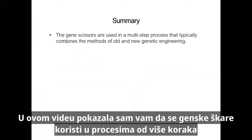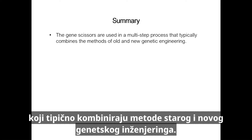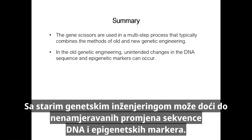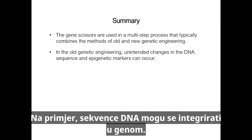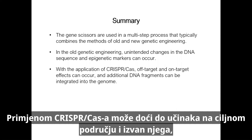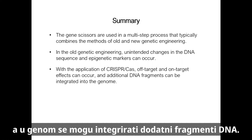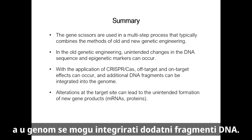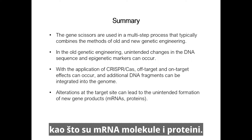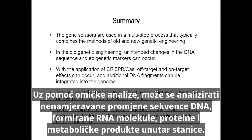In this video, I showed you that the gene scissors are used in a multi-step process that typically combines the methods of old and new genetic engineering. Unintended changes can occur during these processes. With old genetic engineering, unintended changes in the DNA sequence and epigenetic markers can occur — for example, DNA sequences can be integrated into the genome and the distribution of epigenetic markers can change. With the application of CRISPR-Cas, off-target and on-target effects can occur and additional DNA fragments can be integrated into the genome. Alterations at the target site can lead to the unintended formation of new gene products such as mRNAs or proteins. With the help of omics analysis, unintended changes in the DNA sequence, formed RNAs, proteins, and metabolic products within the cell can be analyzed.